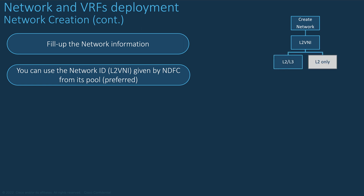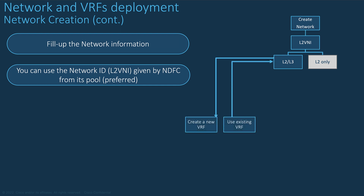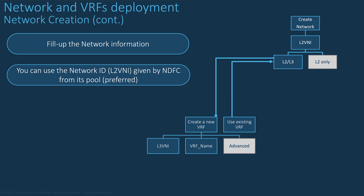You choose if you want Layer 2 only, or a Layer 2 network with its default gateway in a particular tenant — the VRF. You can give a name for that network or leave the name that NDFC provides automatically. If you select Layer 2 with Layer 3, you need to enter the VRF — either create a new one or reuse an existing VRF. If creating a new VRF, you can leave NDFC to provide the next Layer 3 VNI and VLAN ID from its pool. Give a name for the VRF, or use the one given by NDFC. Experts can also go to the Advanced tab. Your VRF has been created.